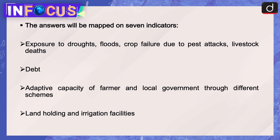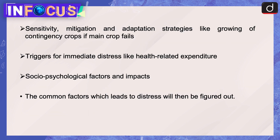The answers will be mapped on seven indicators: exposure to droughts, floods, and crop failure due to pest attacks; livestock deaths; debt; adaptive capacity of the farmer and local government through different schemes; land holding and irrigation facilities; sensitivity, mitigation and adaptation strategies like growing of contingency crops if the main crop fails; triggers for immediate distress like health-related expenditure; and socio-psychological factors and impacts. The common factors which lead to distress will then be figured out.